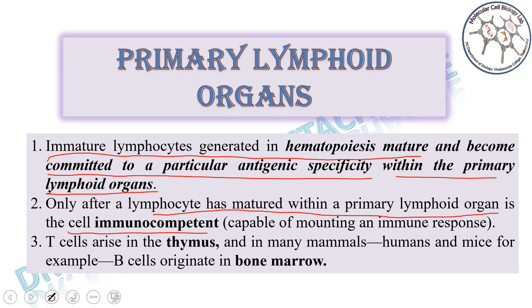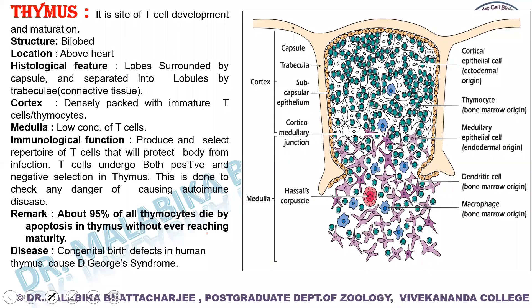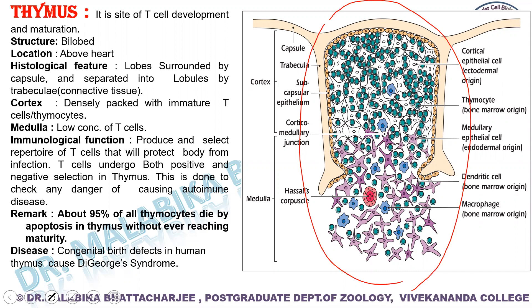T cells mature in the thymus and B cells originate and mature in bone marrow. Looking into the thymus, this is a thymic lobule. The thymus has a capsule, and each lobe is surrounded by a capsule and divided into lobules which are separated by structures known as trabeculae.